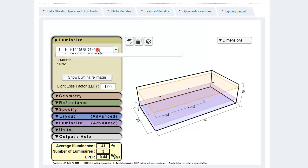Now we will select the desired product from the Luminaire drop-down menu and adjust the light loss factor if necessary.